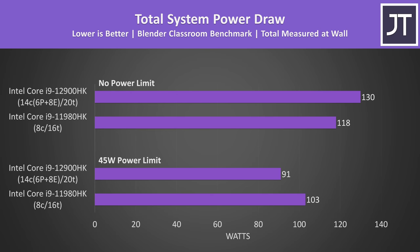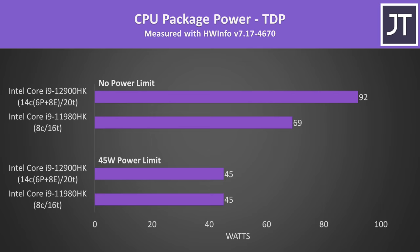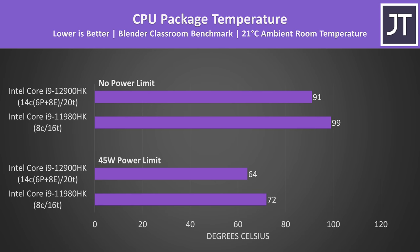With the multi-threaded Blender workload running, I found that the newer 12900HK laptop was drawing less power from the wall when both processors are power limited to a 45 watt TDP using Intel XTU. If we instead just let them run wild, then 12th gen was able to draw 10% more power at the wall. Generally speaking, more power equals more heat. It's worth mentioning that with their newer 12th gen laptop, MSI moved to using a liquid metal pad on the processor, while the 11th gen system has regular thermal paste, so this would be factoring in too.